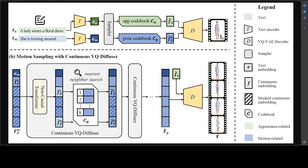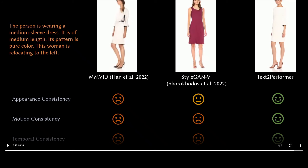Starting from figure A at the top, you can see sampling from the decomposed VQ space. In figure B, motion sampling with the continuous VQ Diffuser: given a text, they first sample the target appearance features and exemplar pose features conditioned on language features extracted by a pre-trained text model. The motion sequence is then sampled, and guided by a motion-aware masking strategy, the continuous VQ Diffuser is iteratively applied until the whole motion sequence is unmasked. The final videos are generated by feeding continuous pose features and appearance features into the decoder of VQ-VAE.